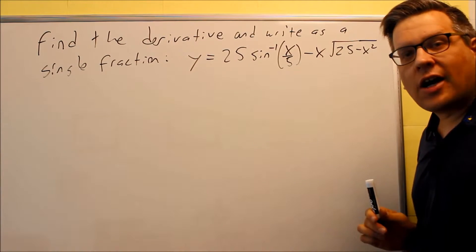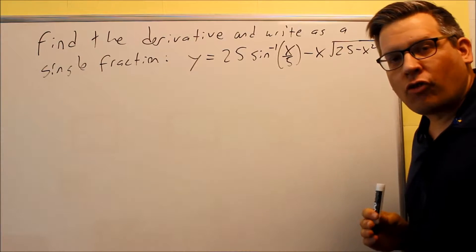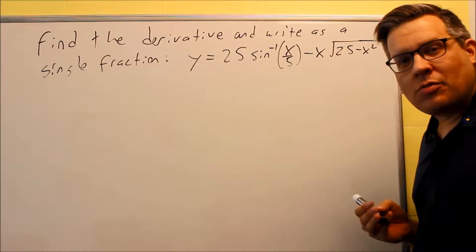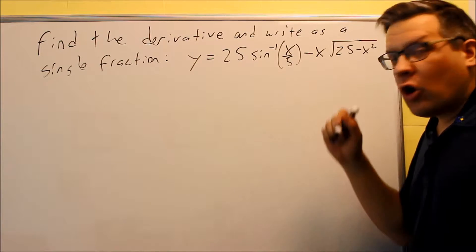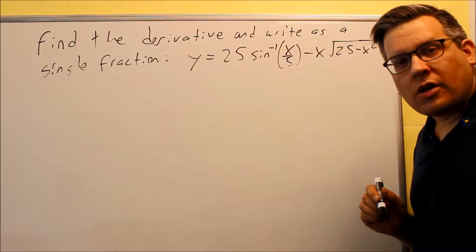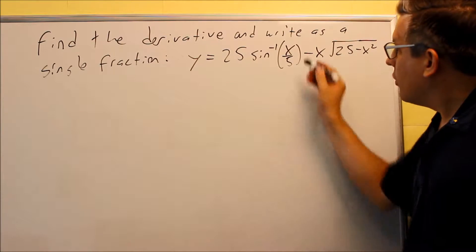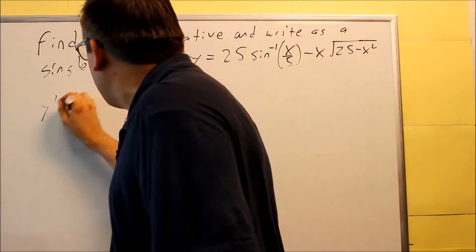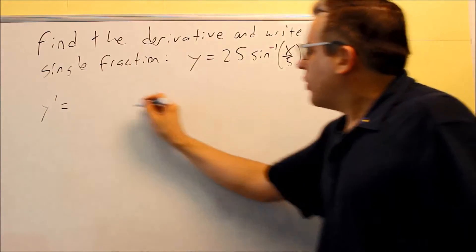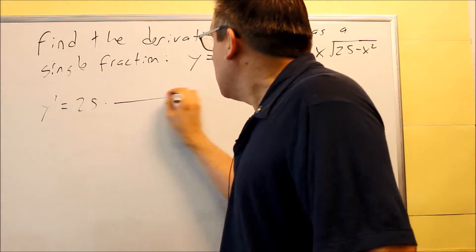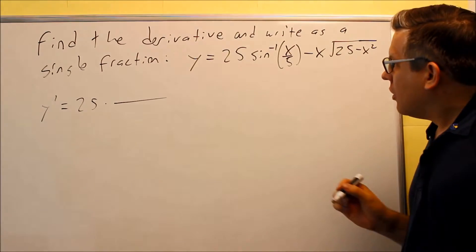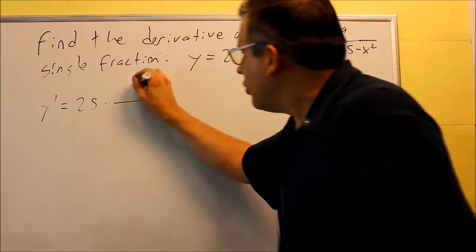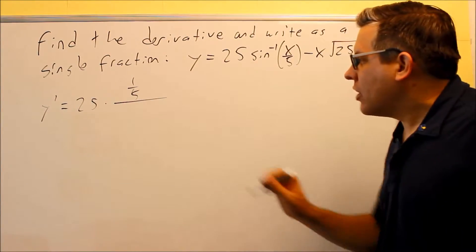The first piece has an inverse sine in it, which means we have to use the formula for the derivative of the inverse sine, which we derived earlier. It's going to be u-prime over the square root of 1 minus u squared. We're going to apply that formula here. The u is going to be x over 5, so u-prime is 1/5, which means when you do the derivative you're going to get a 1/5 on top.